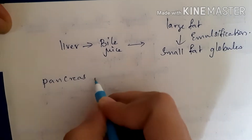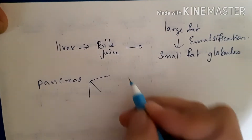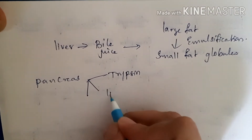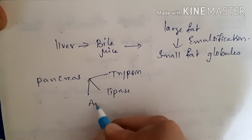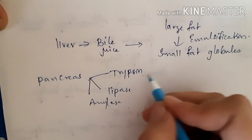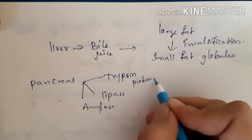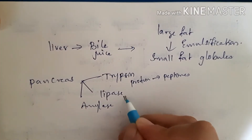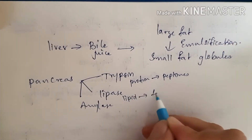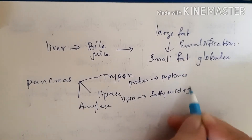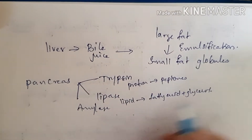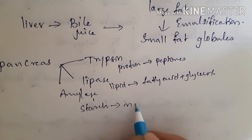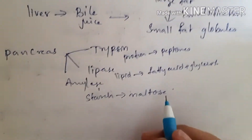Next we have the pancreas. The pancreas secretes trypsin, lipase, and amylase. Trypsin converts proteins to peptones. Lipase converts lipids to fatty acids and glycerol. Amylase converts starch to maltose.